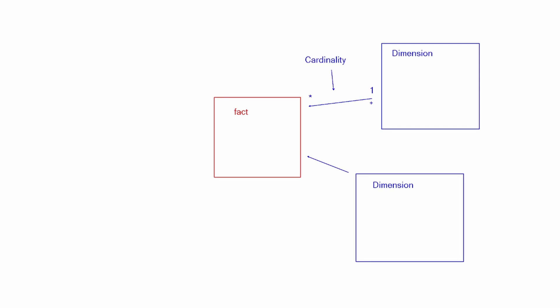With cardinality you have several different options. The one we already see is the one-to-many. We also have a many-to-many and a one-to-one. So cardinality is the type of relationship. A one-to-many relationship — a fact table surrounded by dimension tables — is the ideal setup for Power BI in the star schema.